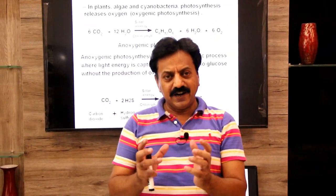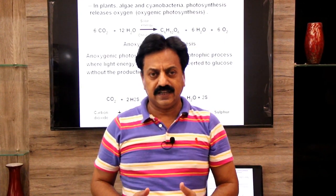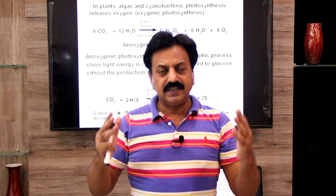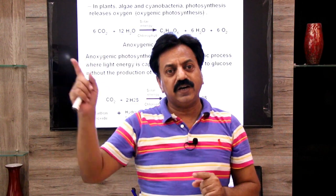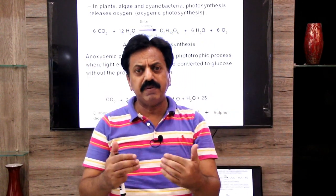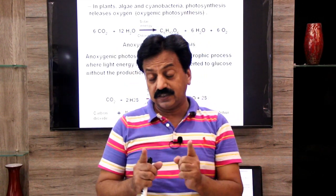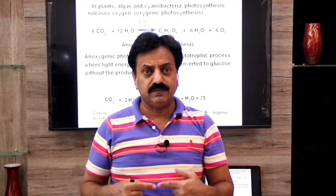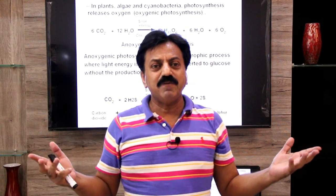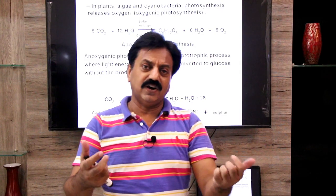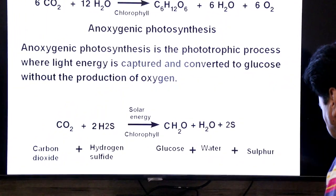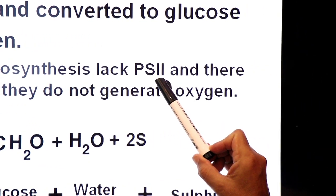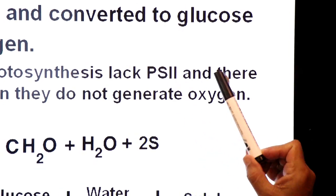Why do these bacteria use hydrogen sulfide instead of water? Recall from Chapter 11 Bioenergetics: photosynthesis involves two photosystems — PS1 (Photosystem 1) and PS2 (Photosystem 2). The water-splitting complex is found only in PS2, not in PS1. These bacteria performing anoxygenic photosynthesis use only PS1; PS2 is absent from their cytoplasm. Because PS2 is absent, they cannot use water and cannot hydrolyze water.